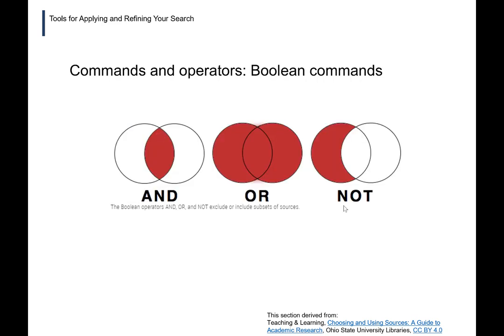Then there are the Boolean commands or Boolean operators. There are three — NOT, AND, and OR — but I'm going to focus on AND and OR. These two do opposite things. AND focuses the search by making sure that whatever keywords appear on either side of AND are both present, filtering out everything else. OR, when put between two words, tells the database to pick up any case where both terms are present, but also any case where either term is present without the other. AND narrows.